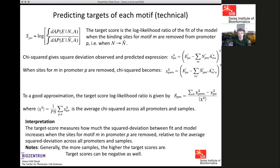Technically, this log likelihood ratio is calculated as the difference of chi-squared deviations between fit and observed expression, with versus without the motif, divided by the average chi-squared across all samples and all promoters. If you want the derivation, it is given in detail in the iSMARA paper.